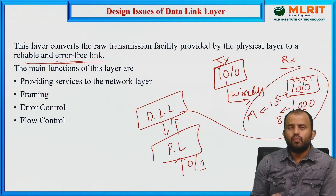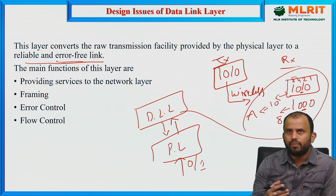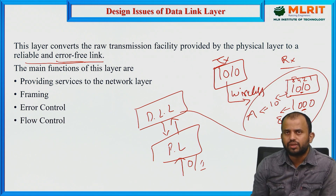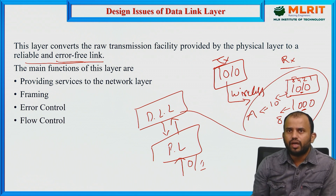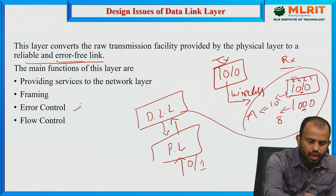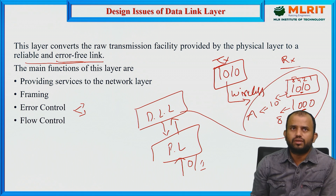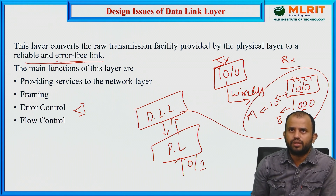What is meant by error-free medium? In an error-free medium, if while the information is transmitted from source to destination any error occurs, we are able to rectify the errors — meaning we are able to detect the errors and we are able to correct the errors. That is what we call an error-free transmission medium, or error-free link.